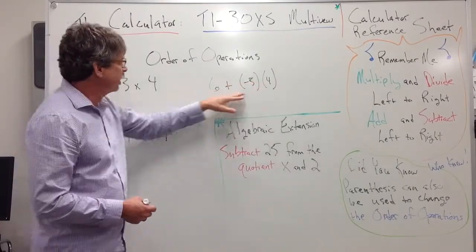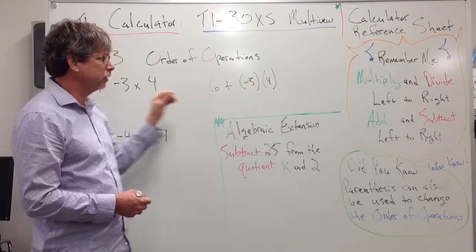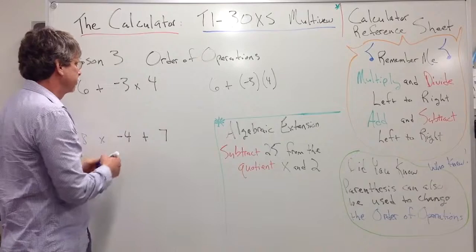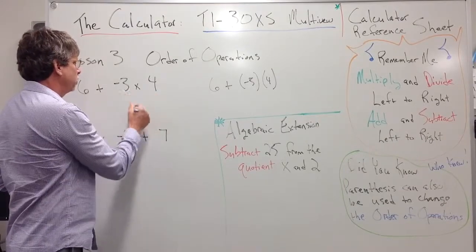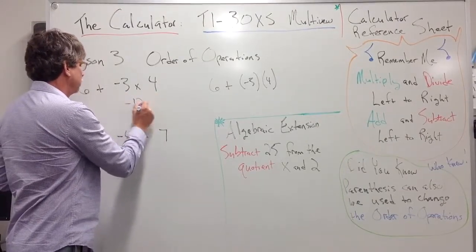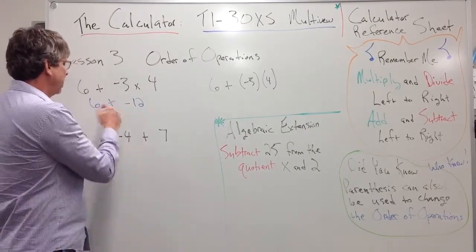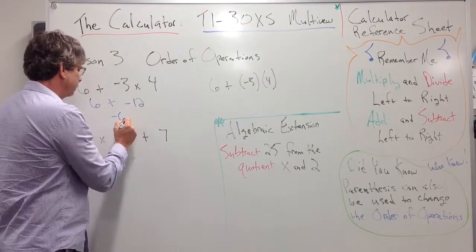So this example really helps you see the order of operations better than this example. But either way that we write it, we've still got to be multiplying. So -3 × 4 would give us -12. And we bring down the 6 + (-12), and then if we add those together, we would end up with -6.